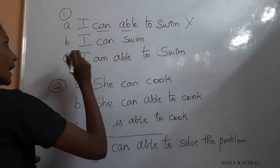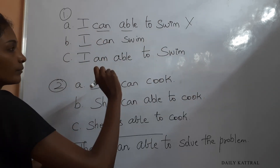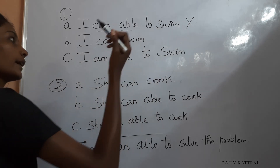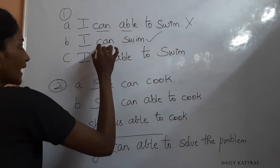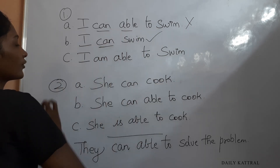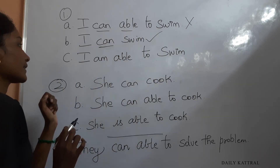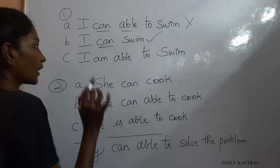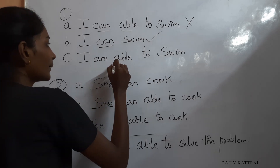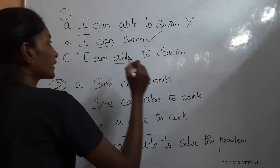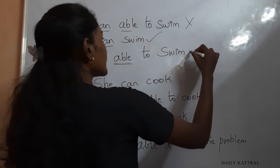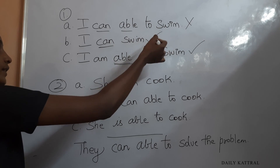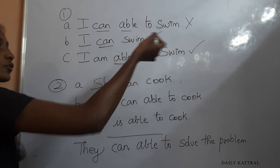Option two: 'I can swim' — this is correct, using 'can.' Option three: 'I am able to swim' — this is correct, using 'able.' So options two and three are both correct. Option one is incorrect.